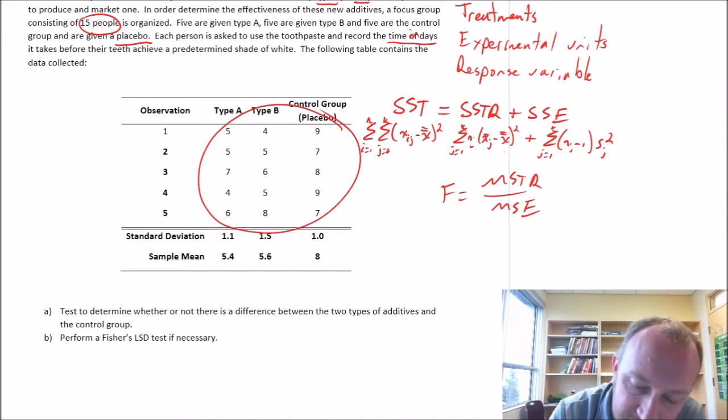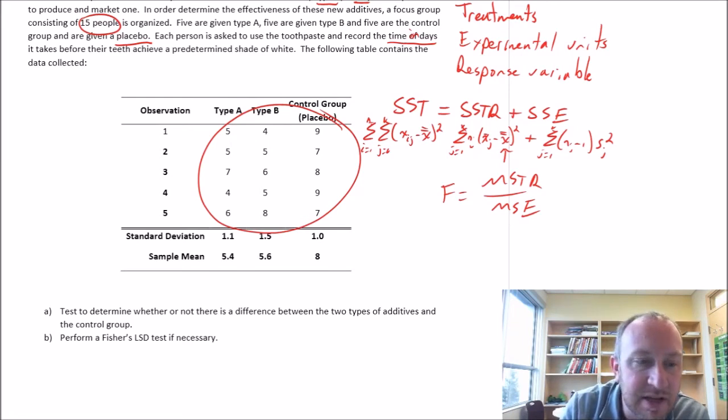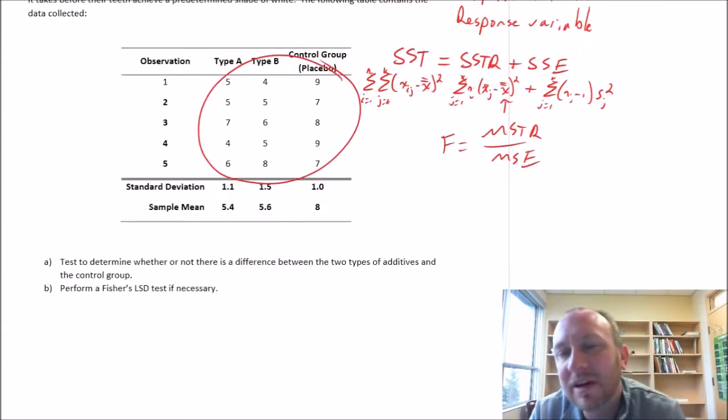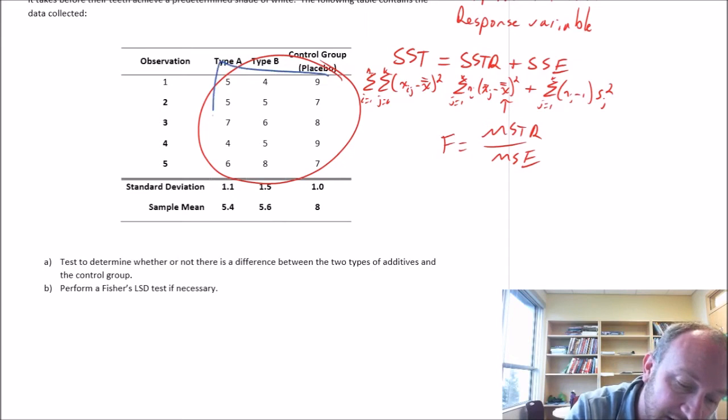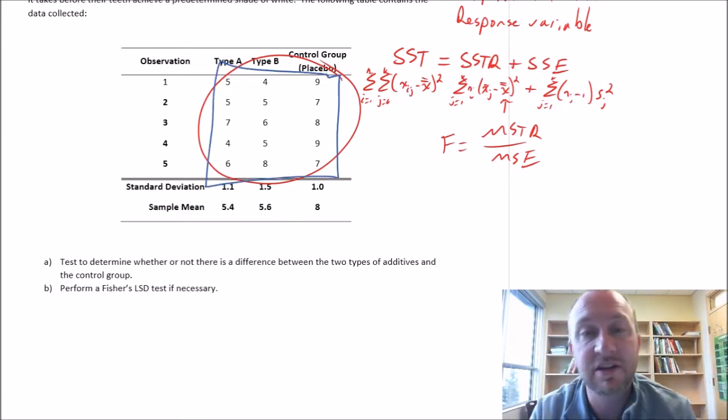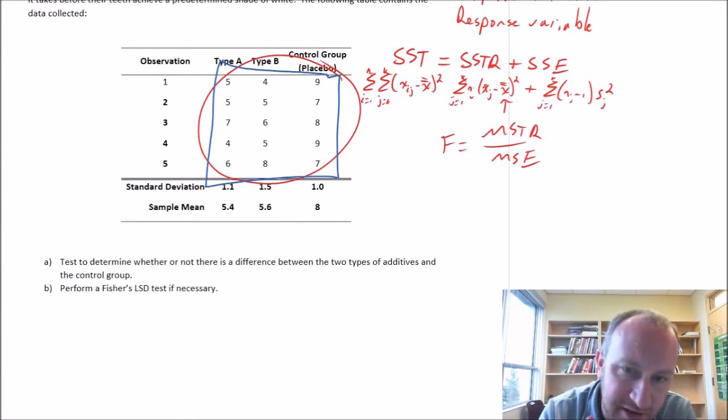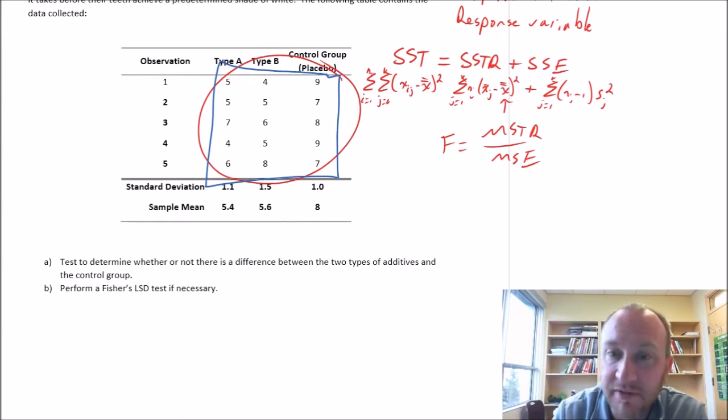The first thing that we're going to need here, we'll start with sum of squares treatment. So the first thing we need is our grand mean. Now the grand mean can sometimes be an easy place to make a simple mistake. There's different ways that we can calculate the grand mean. One, the long way, is to literally just calculate the mean of that entire data set. So I have 15 observations - what's the average of those 15 observations? That can be a little bit time-consuming, especially if you're in the middle of writing an exam.